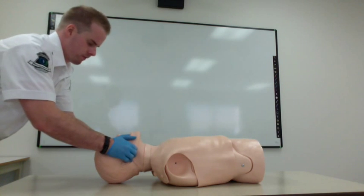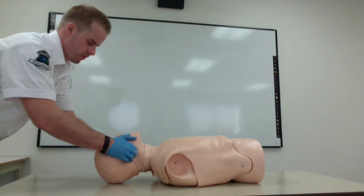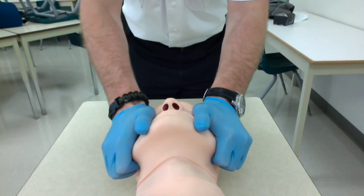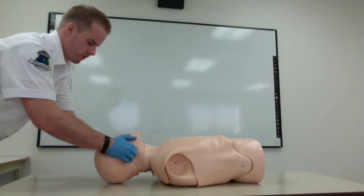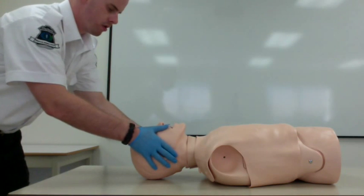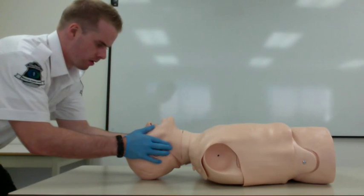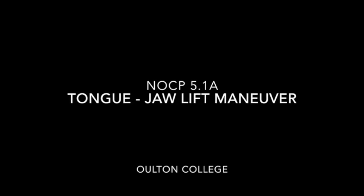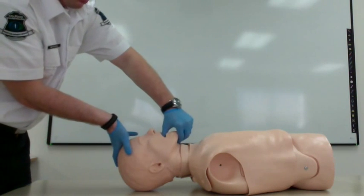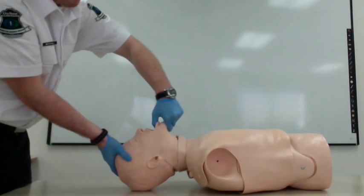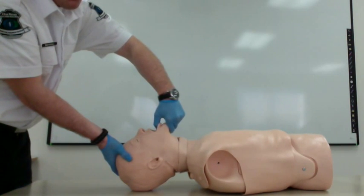To perform a jaw thrust, place the thenar on the zygomatic arch. Then, using your index fingers, pull the mandible upward. Alternatively, place the thenar on the zygomatic arch and use your fingers to push the mandible forward while tilting the head back. Or place one hand on the forehead, grasp the tongue and mandible with your other hand, and pull it upward.